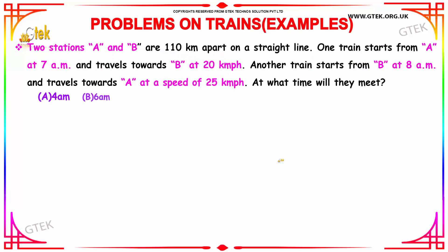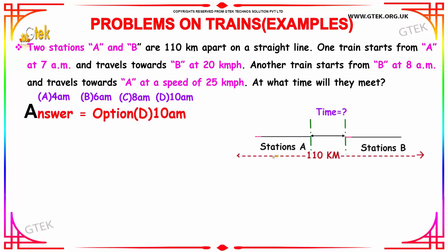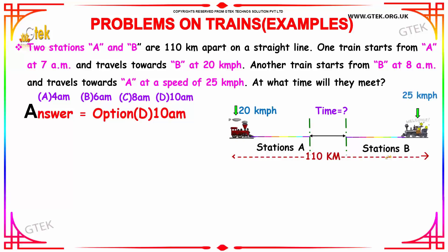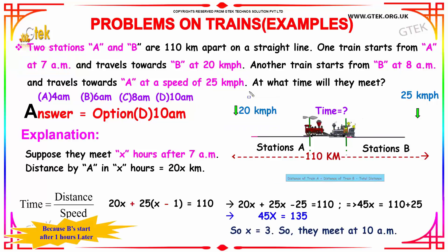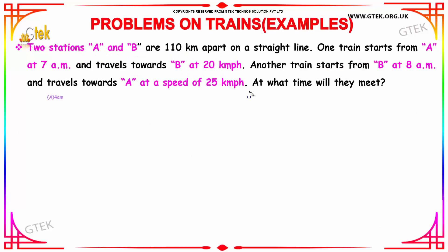Two stations, A and B, are 110 km apart. One train starts from A at 7 a.m. and travels towards B station at 20 km per hour. Another train starts from B at 8 a.m., one hour later, and it travels towards A at 25 km per hour. At what time they will meet? This is the question.